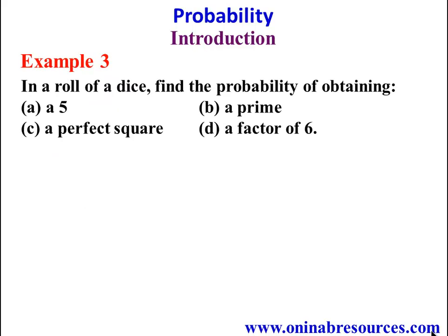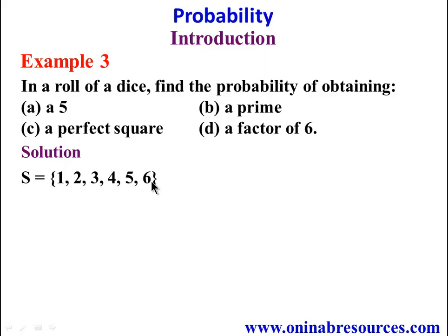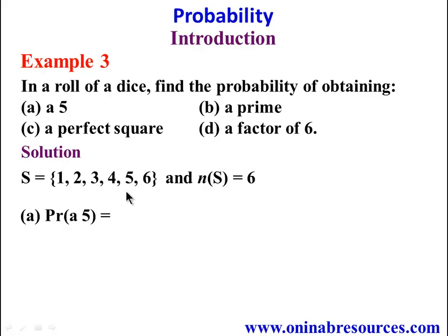Example 3: In a roll of a dice, find the probability of obtaining A) a 5, B) a prime, C) a perfect square, D) a factor of 6. The sample space is {1, 2, 3, 4, 5, 6}, so n(S) = 6. For part A, the probability of getting a 5: since there is only one 5 in the sample space, that gives 1/6.